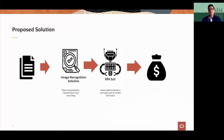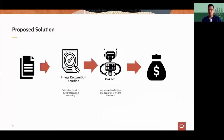We are talking about an API we created for them, and actually an API we offer to many other customers. You can get the idea of many customers using the same API with cloud native principles coming together. The first step is the image recognition solution via the API, supported by many Oracle Cloud Infrastructure Services plus a couple of Google Services. For this specific customer, we also incorporated an RPA bot that reviews the information from the first step and makes decisions to approve or reject the loan.